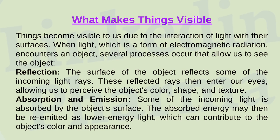What makes things visible? Things become visible to us due to the interaction of light with their surfaces. When light, which is a form of electromagnetic radiation, encounters an object, several processes occur that allow us to see the object. Reflection: the surface of the object reflects some of the incoming light rays. These reflected rays then enter our eyes, allowing us to perceive the object's color, shape, and texture.